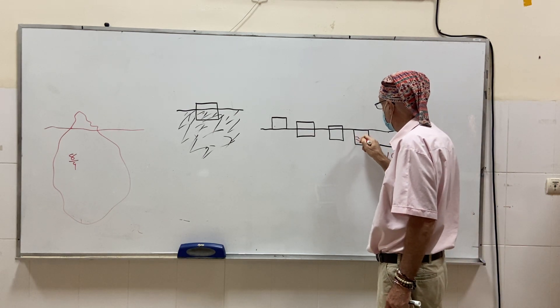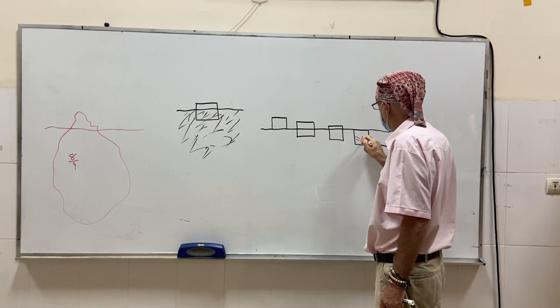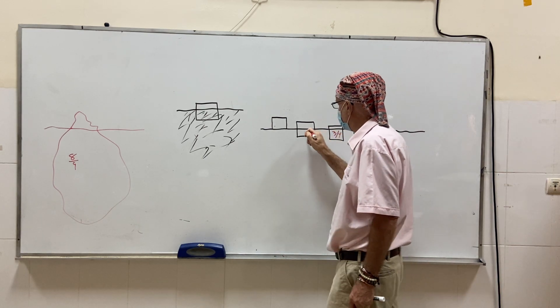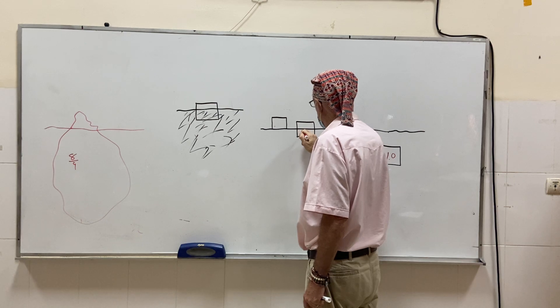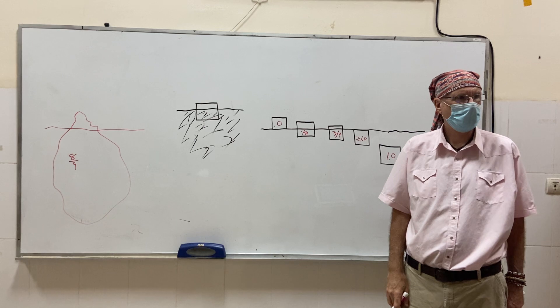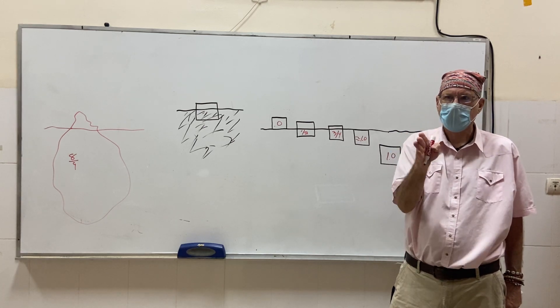This is approximately equal to 1.0. All right. This is three-quarters. This is one-half, and this is around zero. Clear? All right. We're done.